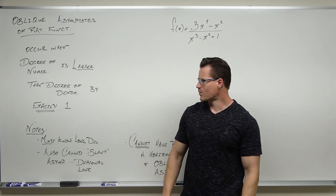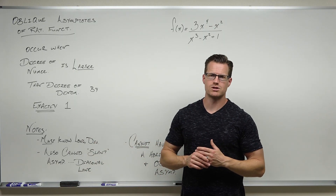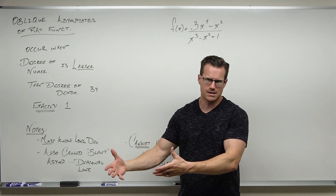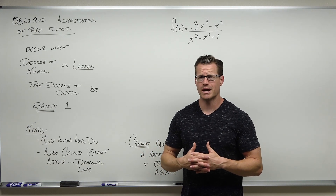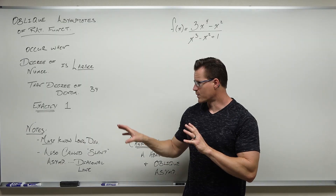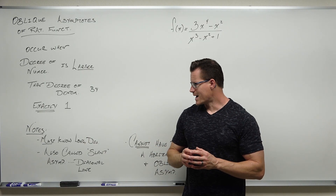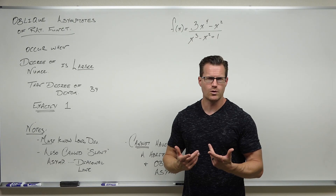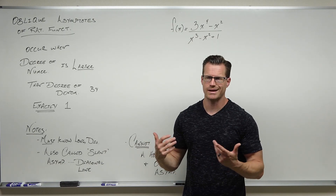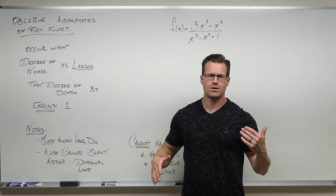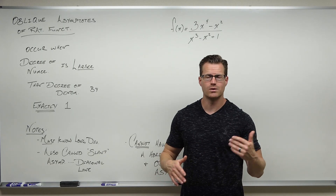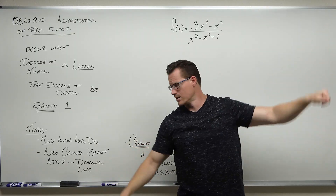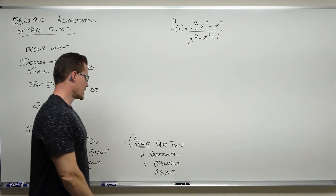A couple of notes: we really have to know long division of polynomials. I'm only doing one example in this video because we'll be practicing it later. You might also hear this called a slant asymptote from time to time — that's informal. The formal term is oblique asymptote. You might hear it called a slant or a diagonal asymptote because it is just a diagonal line. Horizontal was already taken care of; now we're on diagonal.